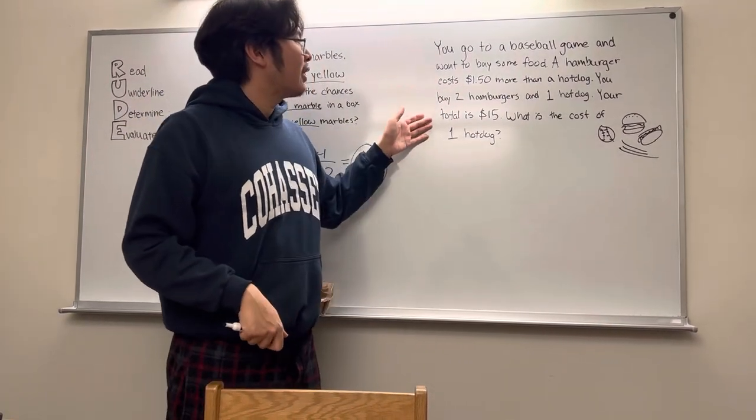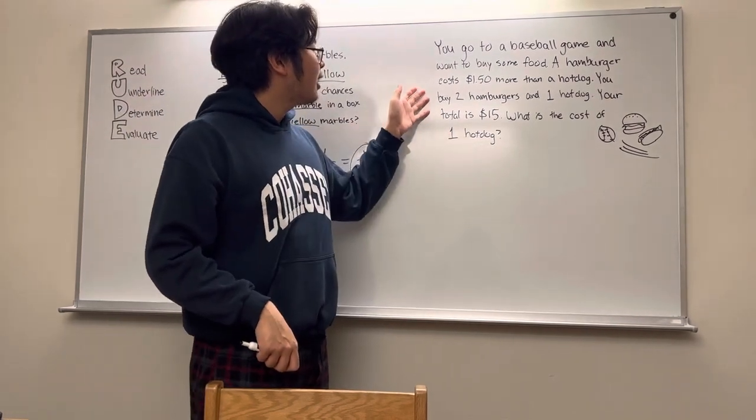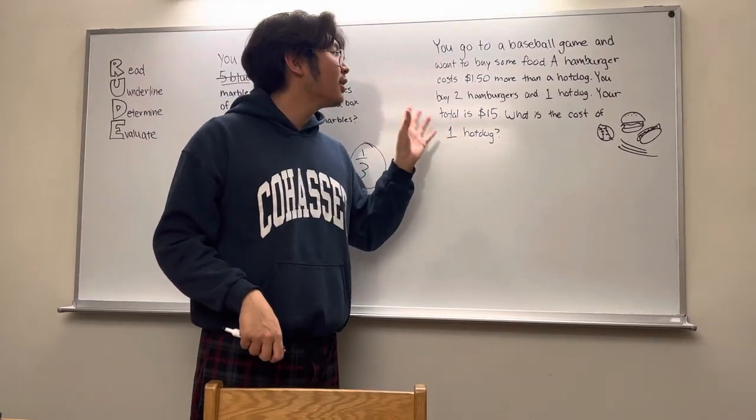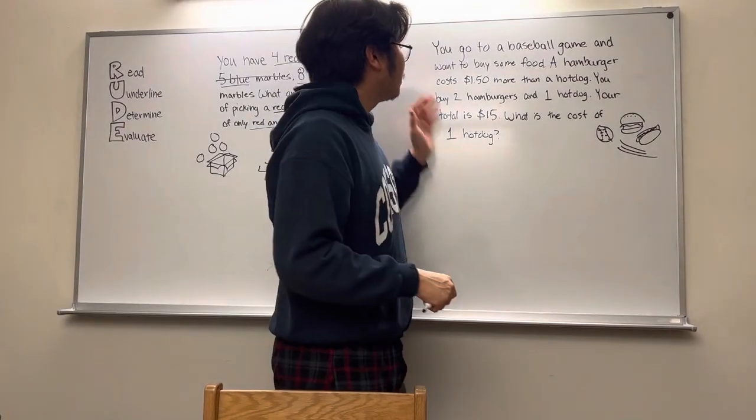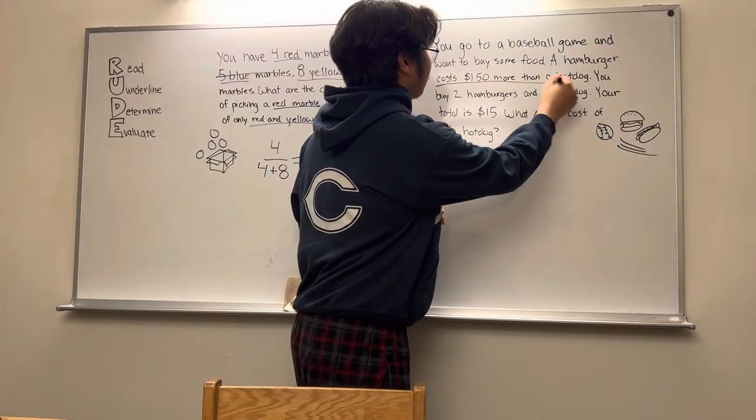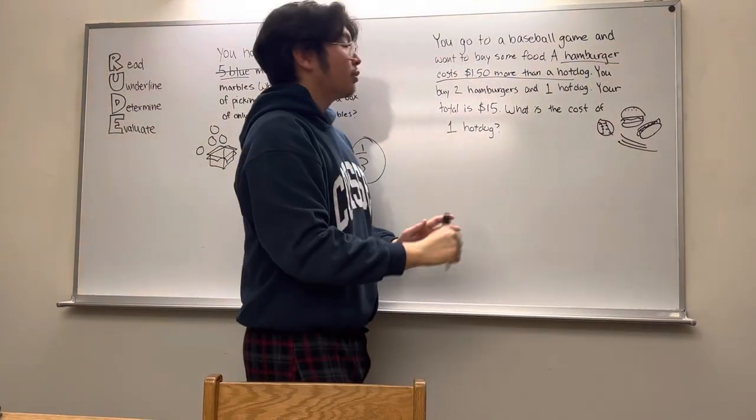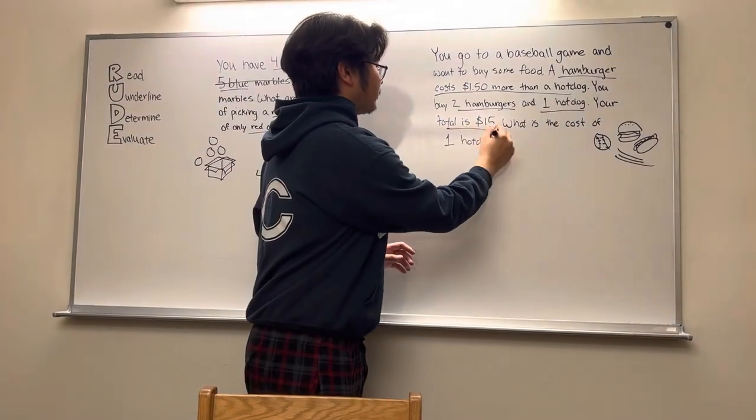So, this question is a little bit lengthy. There's a lot of information involved. So, in order to kind of help you try and see what information is relevant, let's try and underline. So, what do we think is relevant? A hamburger costs more than a hot dog, you buy two hamburgers and one hot dog, and your total is $15.